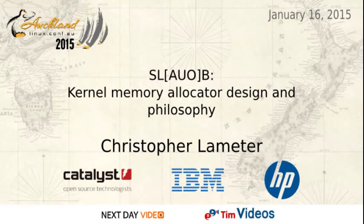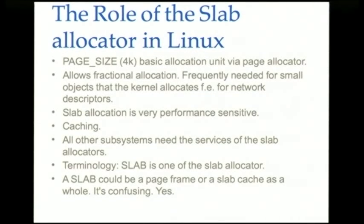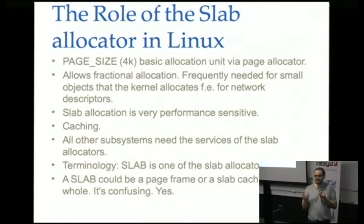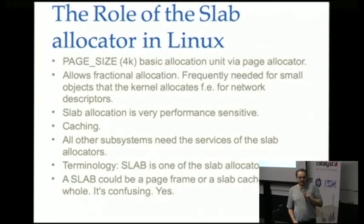The slab allocation in the Linux kernel is a bit of an esoteric subject matter because most end-user userspace programmers never see much of it. On the other hand, most kernel programmers constantly have to interact with it because they need small objects for their kernel code. Fundamentally, basic memory allocation in the Linux kernel works only with page-size frame sizes, so you can ask for a 4K memory block or larger multiples from the page allocator — that's the basic operation of the memory subsystem.